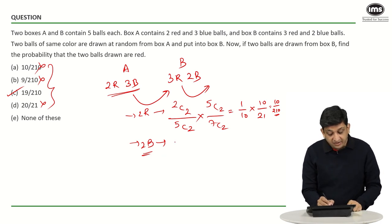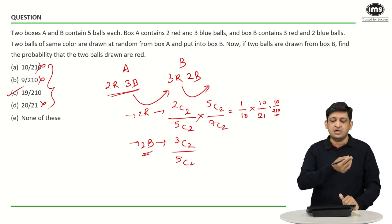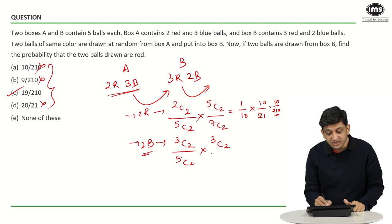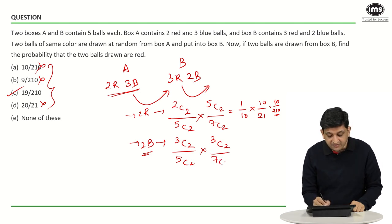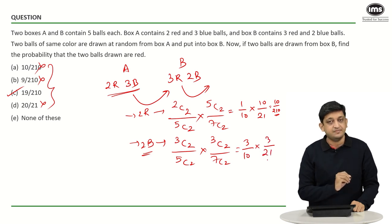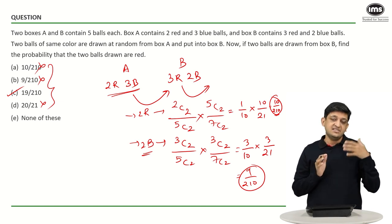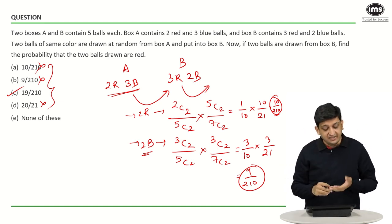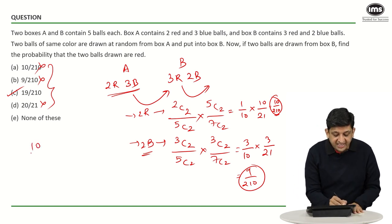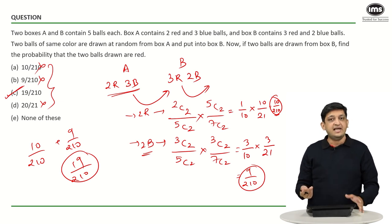Continuing: 2 blue balls would be transferred from A to B. There are 3 blue balls in A, so the number of ways to select 2 is 3C2, divided by 5C2 for selecting 2 from all 5 balls. After transferring, box B has 3 red and 4 blue balls — 7 total. The probability of drawing 2 red from B is 3C2 / 7C2, which gives 3/10 × 3/21 = 9/210. The first case gave 10/210 and the second gives 9/210. Because it is an either-or scenario — transferring 2 red or 2 blue — we add them: 10/210 + 9/210 = 19/210. So the correct answer is option C, 19/210.